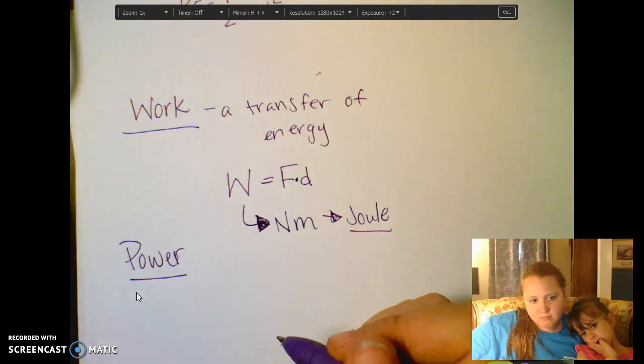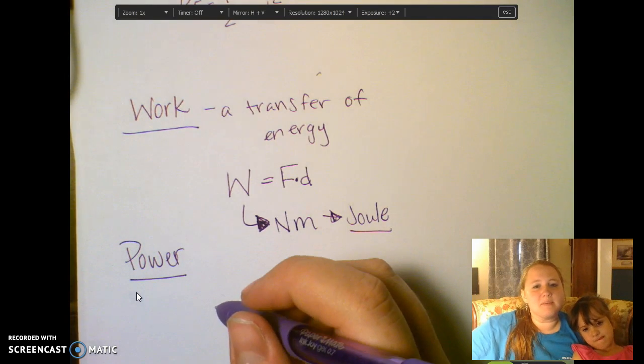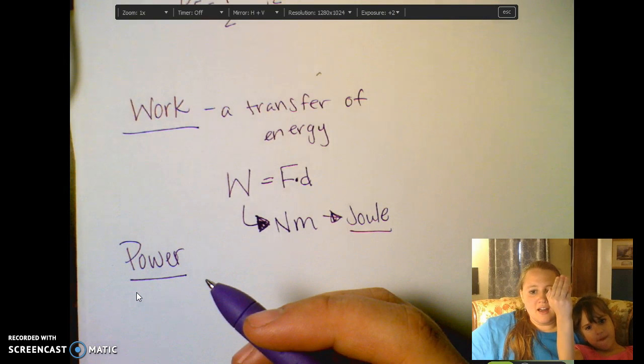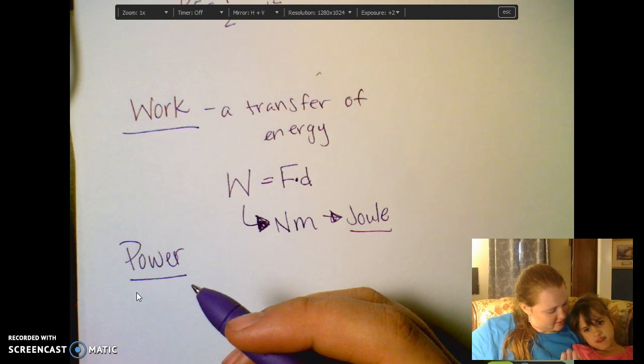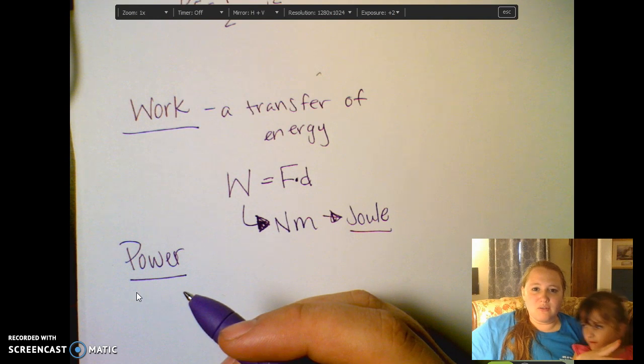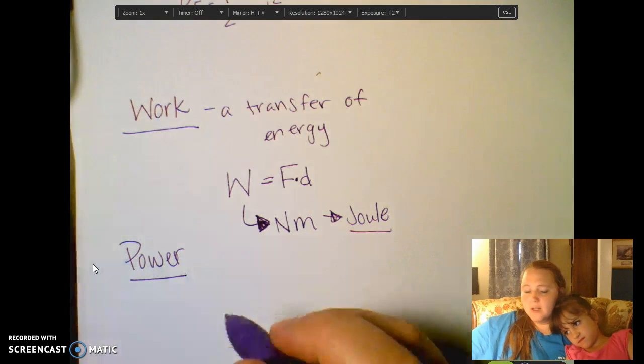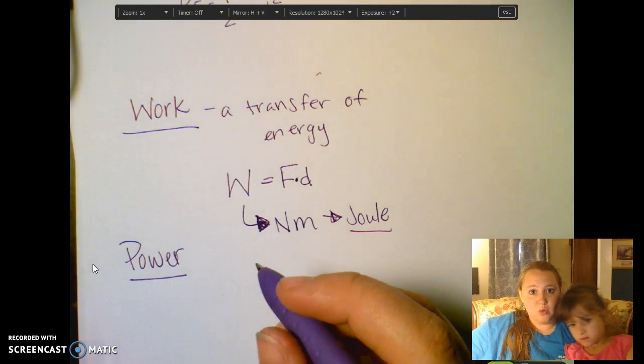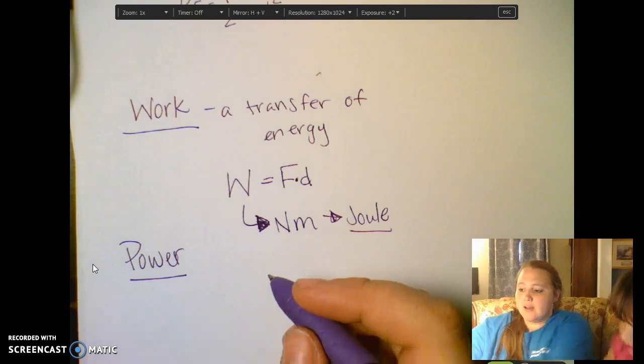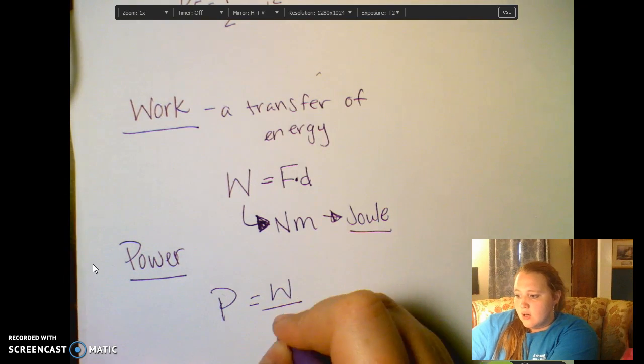Now power, just another definition, is the rate at which we do work. So anytime something says it's a rate, velocity is the rate of change of position, and acceleration is the rate of change of velocity. So if we're going to look at power, we are looking at the rate of change of work. So we are going to see how our work changes over time. So power is given as work over time.